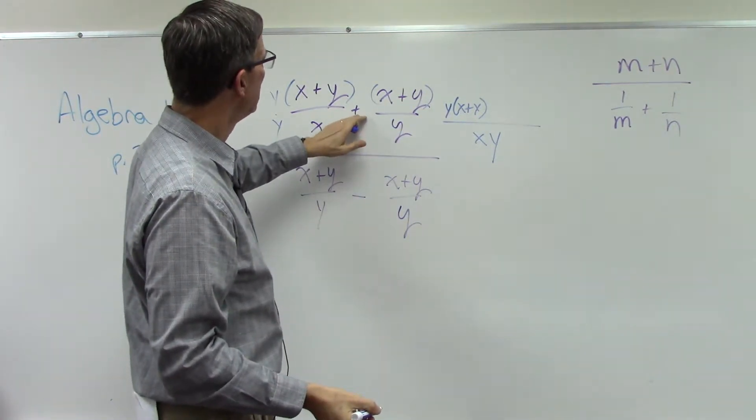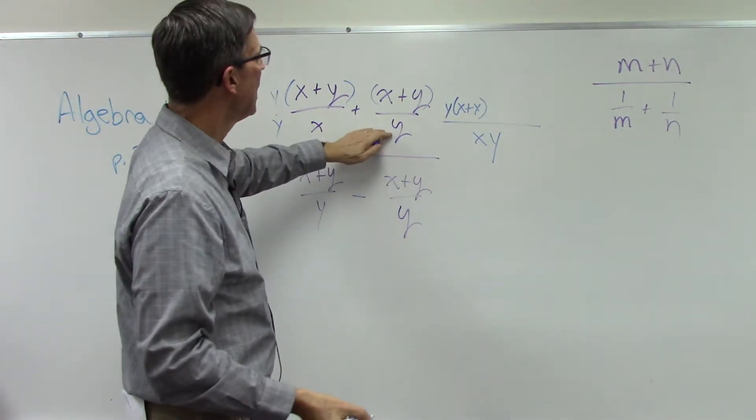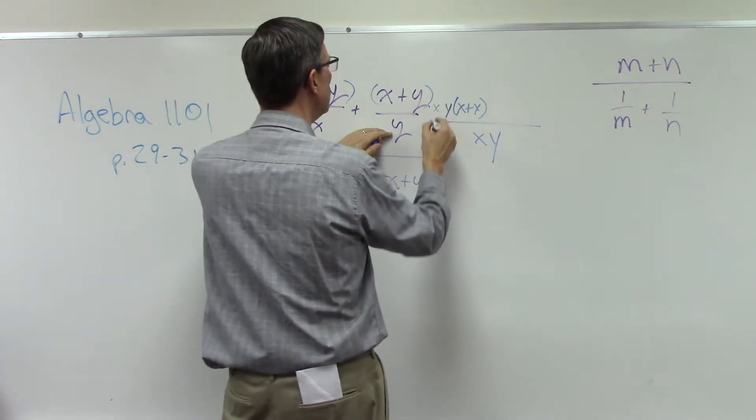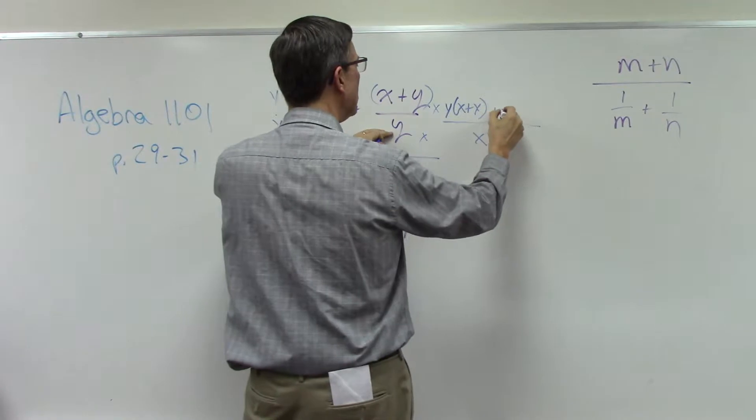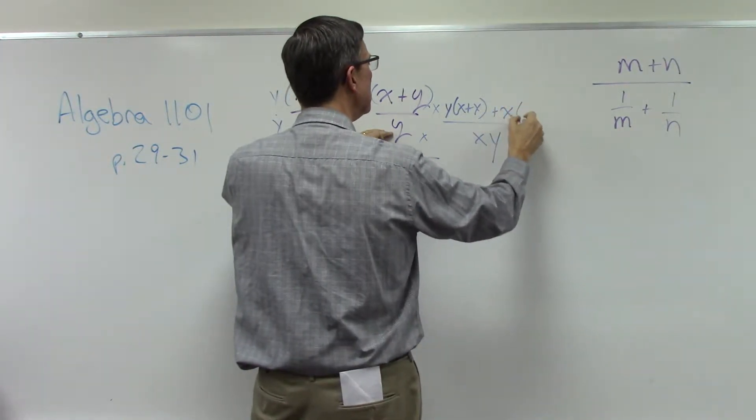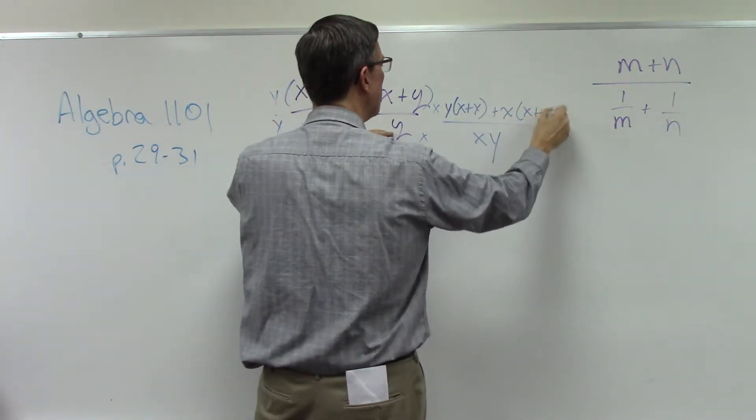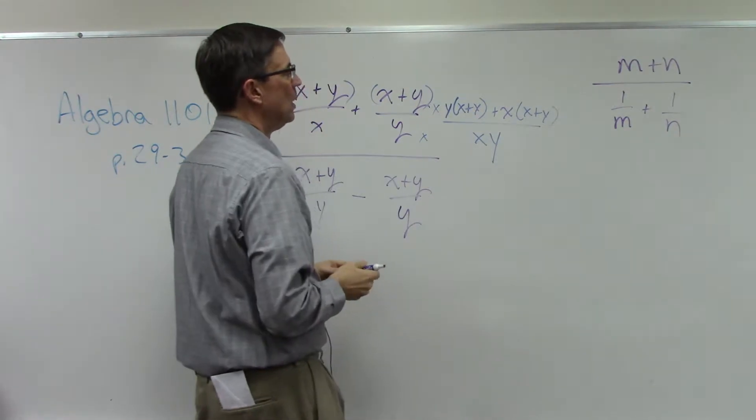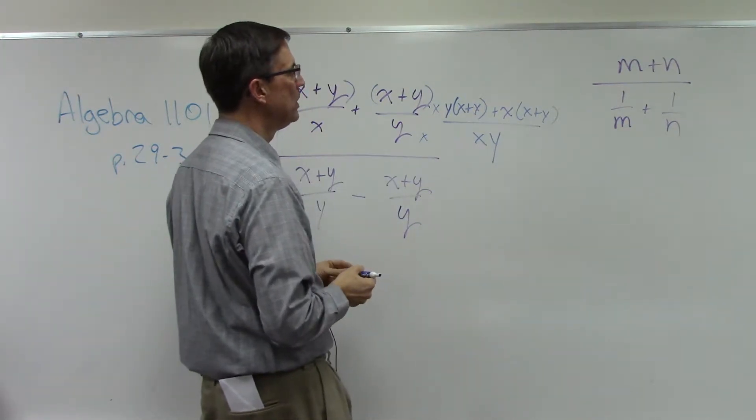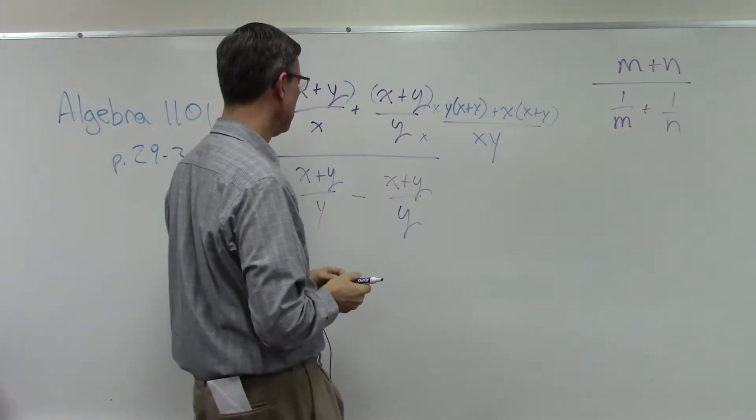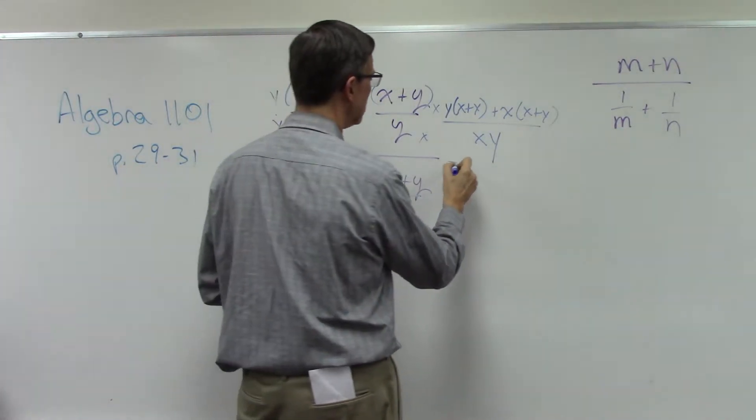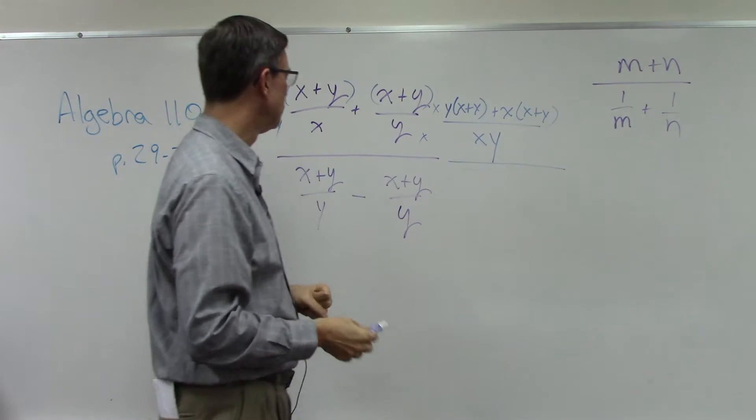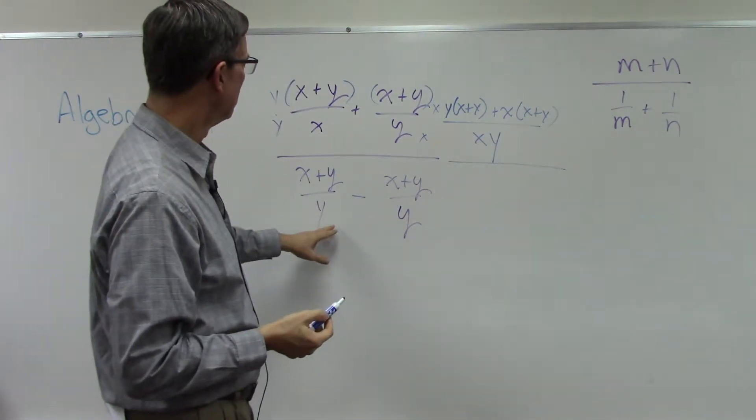Now, this one is missing the x, so I have to multiply by x top and bottom. So plus x times x plus y. Now can we distribute that out? I'm trying to think if that's going to be helpful. Let's wait on that for a minute and see if we need to distribute that out.